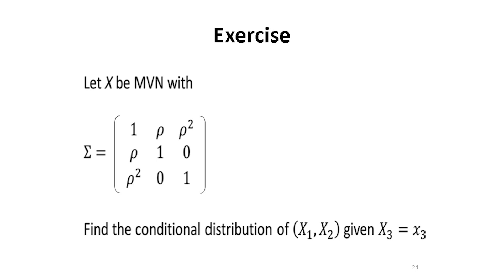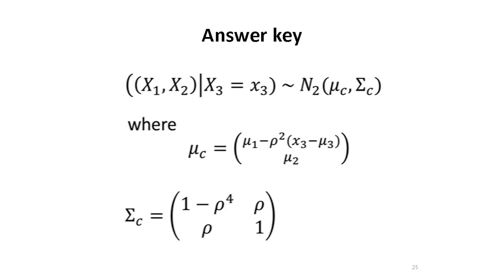As an exercise, suppose x has a trivariate normal distribution with mean vector mu and dispersion matrix as indicated, and you are asked to find the conditional distribution of (x1, x2) given x3, where x = (x1, x2, x3)'. The answer is that given x3, the joint distribution of x1 and x2 is bivariate normal with mean vector mu_c and dispersion matrix sigma_c as indicated.